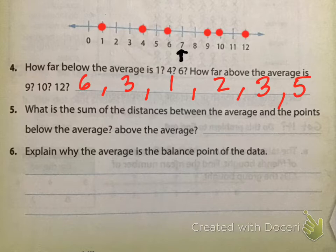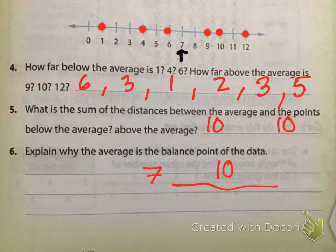It says, what is the sum of the distance? Sum means add. Between the average and the points below the average. So if we were to add up the below the average, six, three, and one, the sum is ten. If we were to add up above the average, two, three, five, we also get ten. So for both of them, seven is the distance from all of the data points above seven is ten, and all of the values below seven is ten. So seven is kind of like that balancing point.